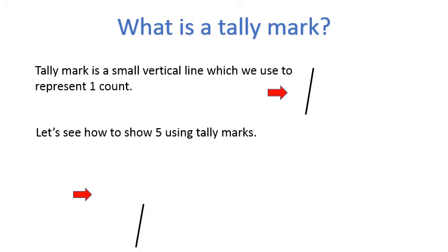Let's see how to show 5 using tally marks. 1, 2, 3, 4 and the 5th line is a diagonal line across the 4 vertical lines. So when you see a bundle of lines like this, remember it will represent 5 counts.